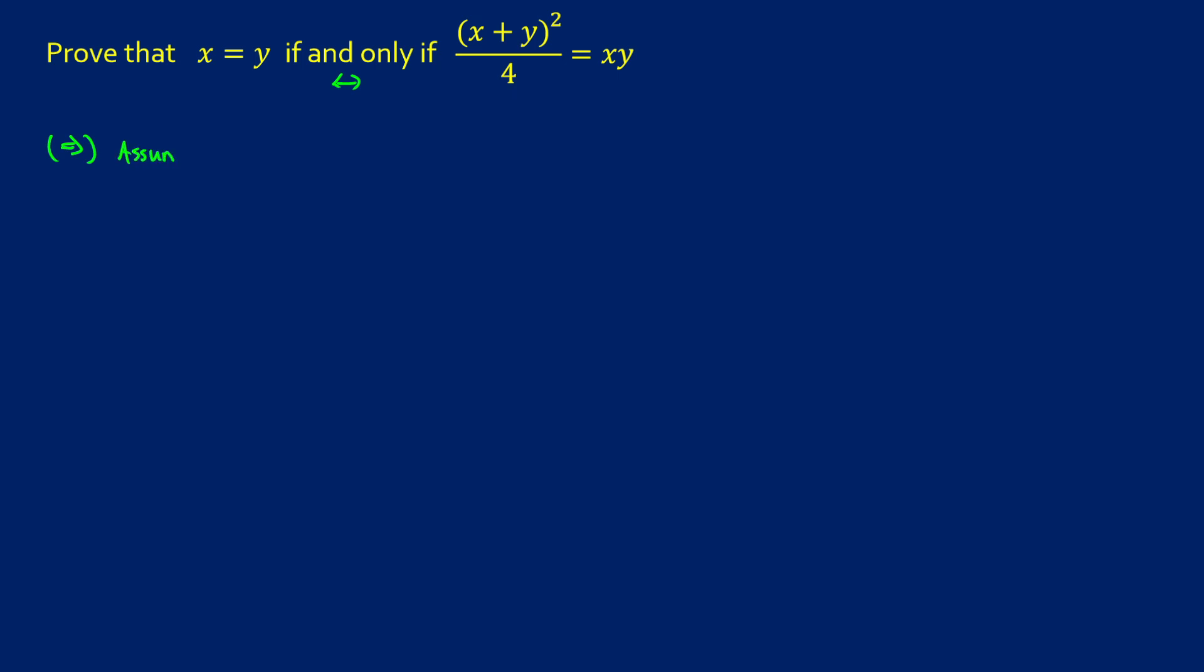So we can assume that x is equal to y. Now we want to show that (x + y)² / 4 is equal to xy. So what can we do in this case? Well, let's take (x + y)² / 4 and we assume that x is equal to y so we can make a substitution here.